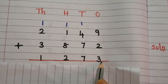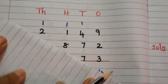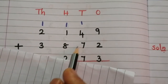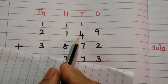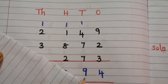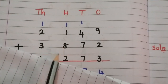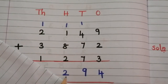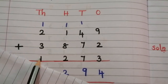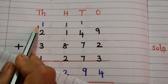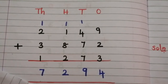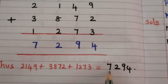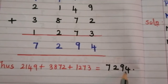3 plus 2 is 5, 5 plus 9 is 14. Write 4 and carry 1. Then 7 plus 7 is 14, 14 plus 4 is 18, plus 1 is 19. Write 9 and carry 1. Next, 8 plus 2 is 10, 10 plus 1 is 11, 11 plus 1 is 12. Write 2 and carry 1. Then 3 plus 1 is 4, 4 plus 2 is 6, 6 plus 1 is 7. The answer is 7294.